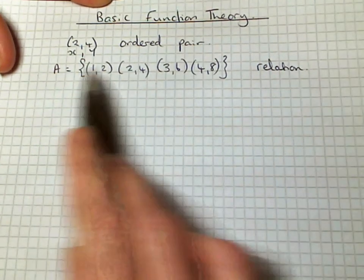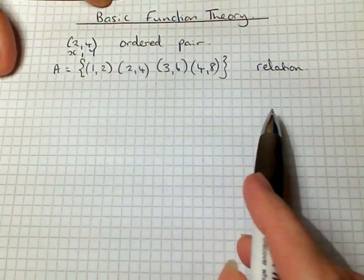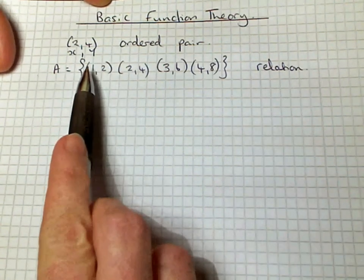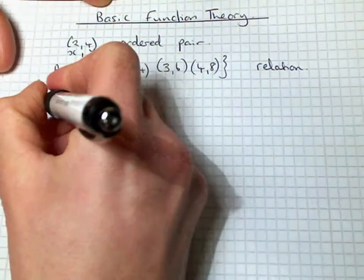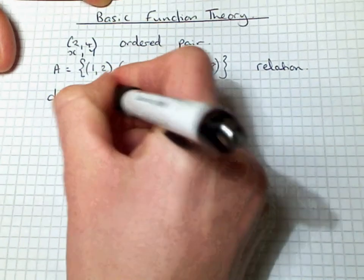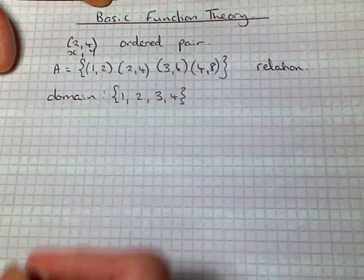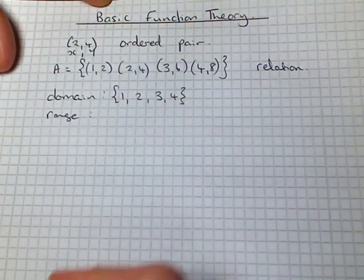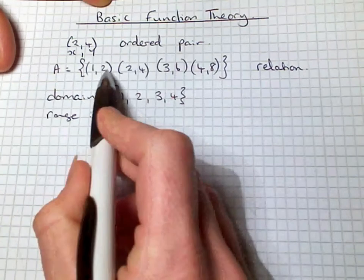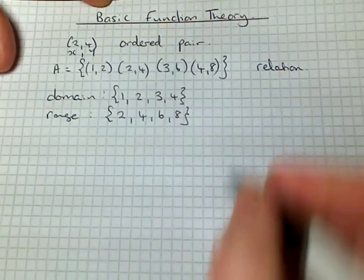From that relation we are able to read off the domain and the range. The domain is the first element in each of the ordered pairs or the x value. Our domain is going to be 1, 2, 3, and 4. Our range is the y value in the ordered pair or the second element which is 2, 4, 6, and 8.